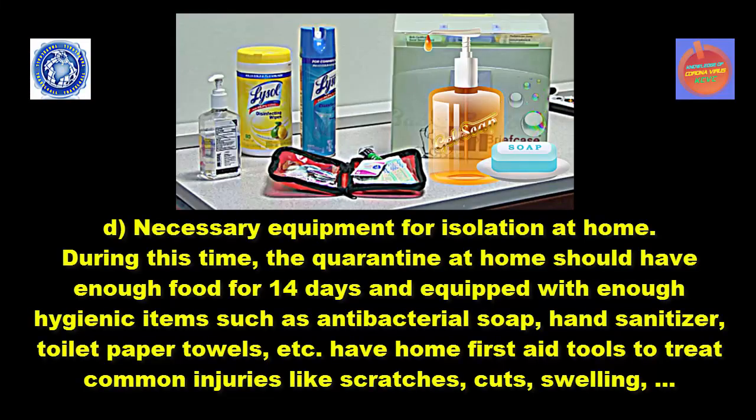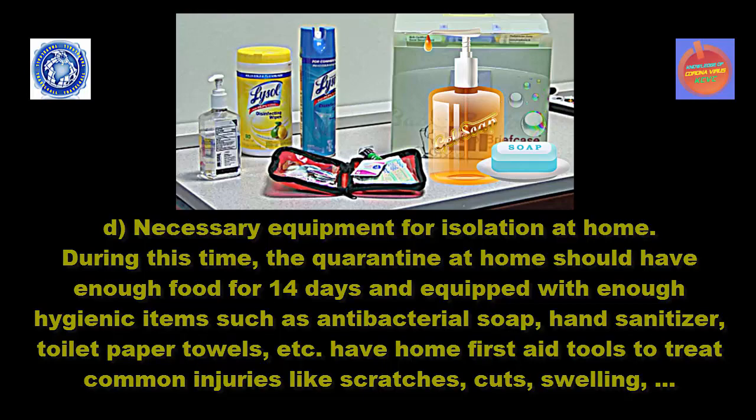Necessary equipment for isolation at home: during this time, the person quarantining at home should have enough food for 14 days and be equipped with sufficient hygienic items such as antibacterial soap, hand sanitizer, toilet paper, towels, etc. Also have home first aid tools to treat common injuries like scratches, cuts, and swelling.